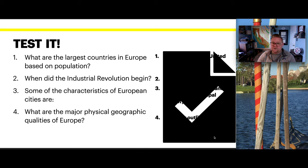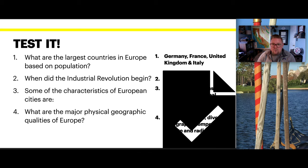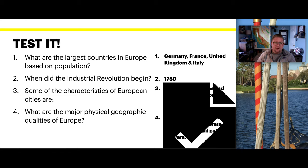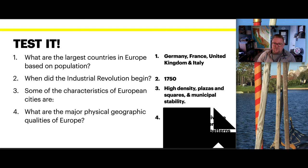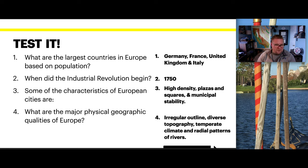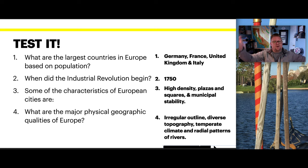The answers: largest countries in Europe by population are Germany, France, United Kingdom, and Italy. The Industrial Revolution began in 1750. Characteristics of European cities include high density, plazas and squares, and municipal stability. The major physical geographic qualities of Europe are very irregular outlines, diverse topography, a temperate but diverse climate for the larger realm, and radial patterns of streams, meaning water radiates from mountain peaks outwards in all directions.